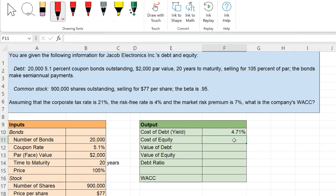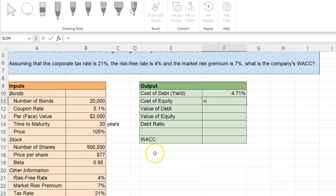Next, we're going to calculate our cost of equity. This is rather straightforward. This is simply equal to the risk-free rate, which is given 4%, plus the beta, which is given 0.95 times the market risk premium, which is also given 7%. So if you do all of that, you get 10.15%. So we have the cost of debt, we have the cost of equity.